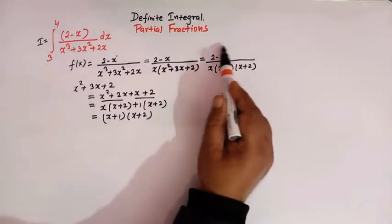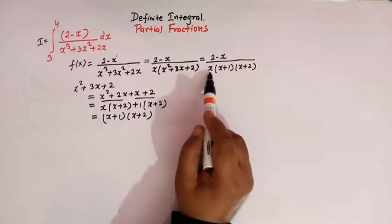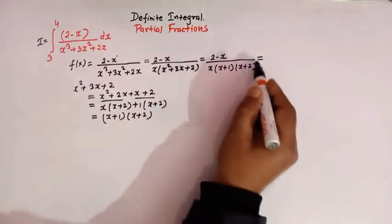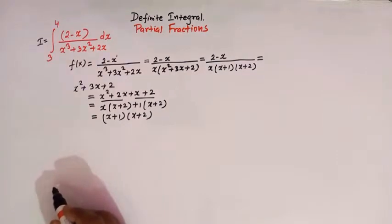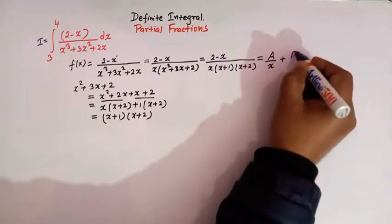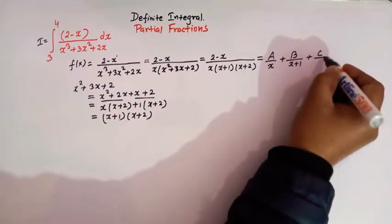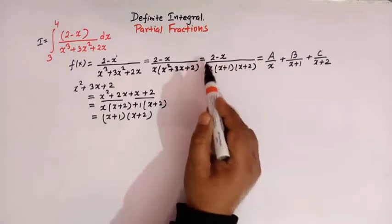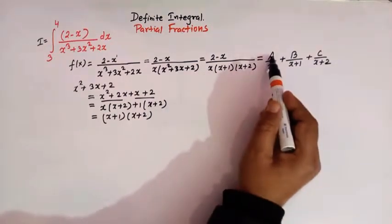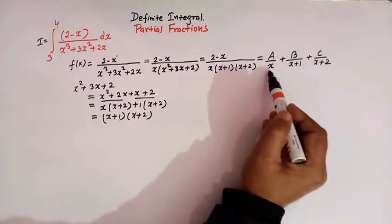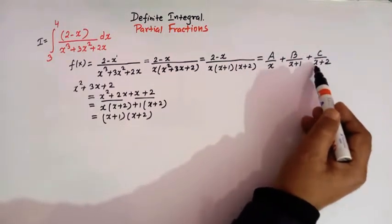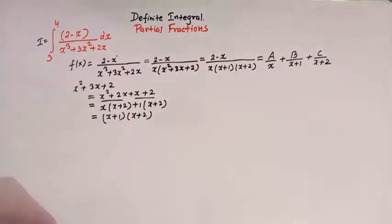So now our integrand takes the form (2 minus x) over x(x plus 1)(x plus 2). The denominator comprises three linear factors. Now we can decompose this rational function into partial fractions. So let us write this as A over x, then B over (x plus 1), and C over (x plus 2), because from the theory of partial fractions, if we have linear factors in the denominator we have constants A, B, C over each respective linear factor.